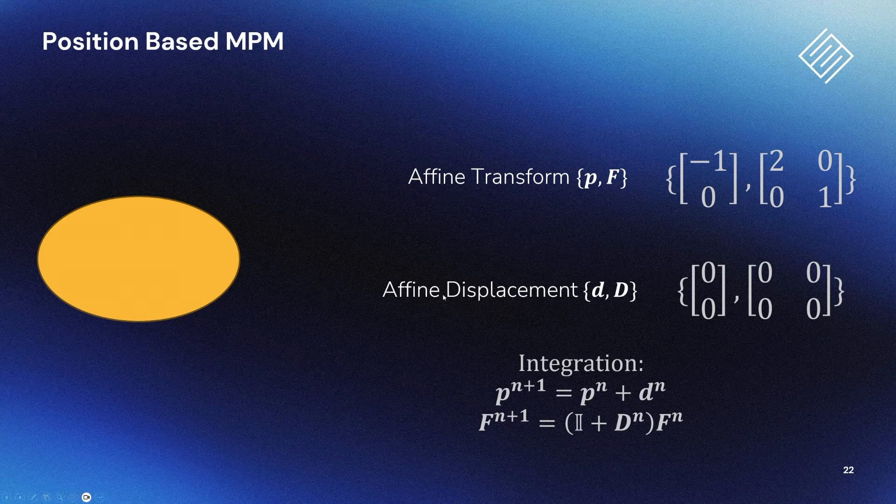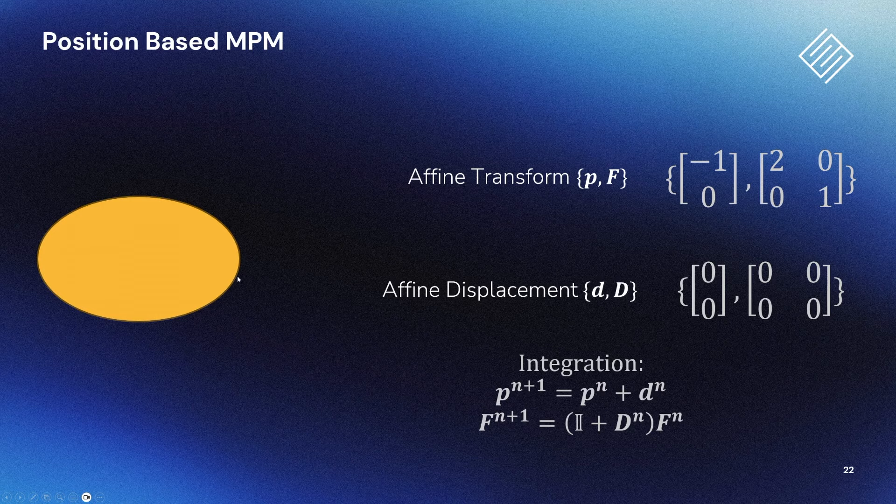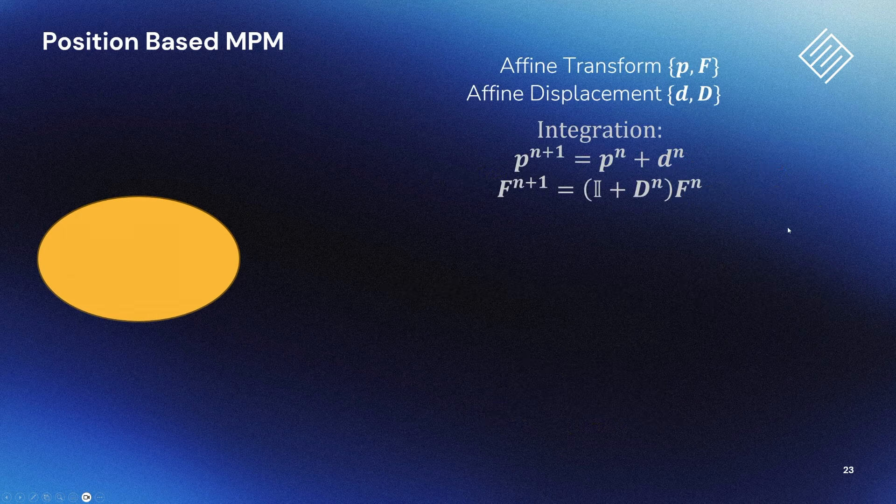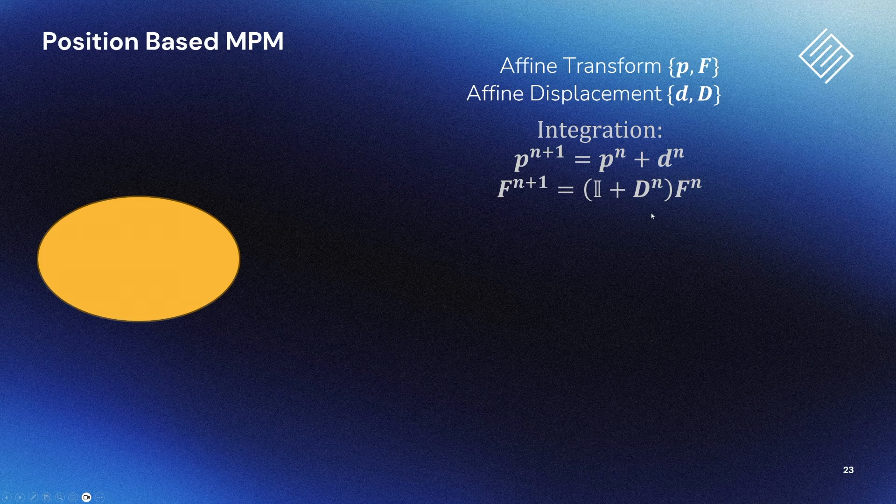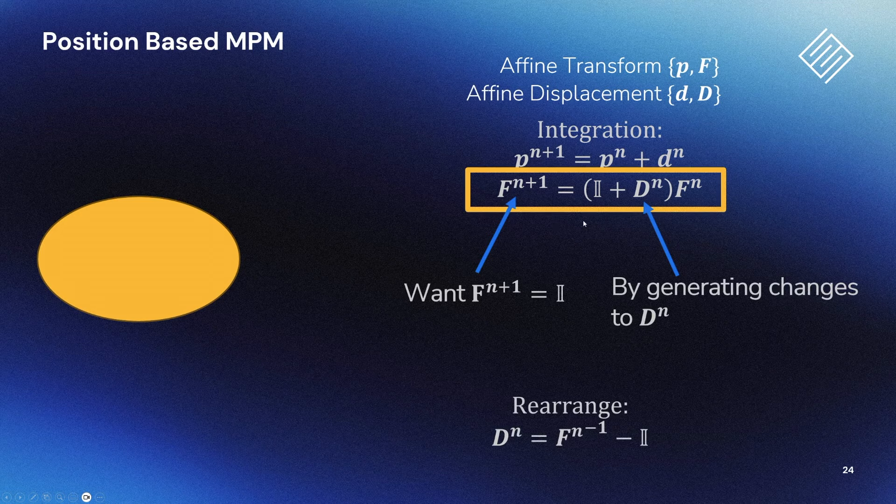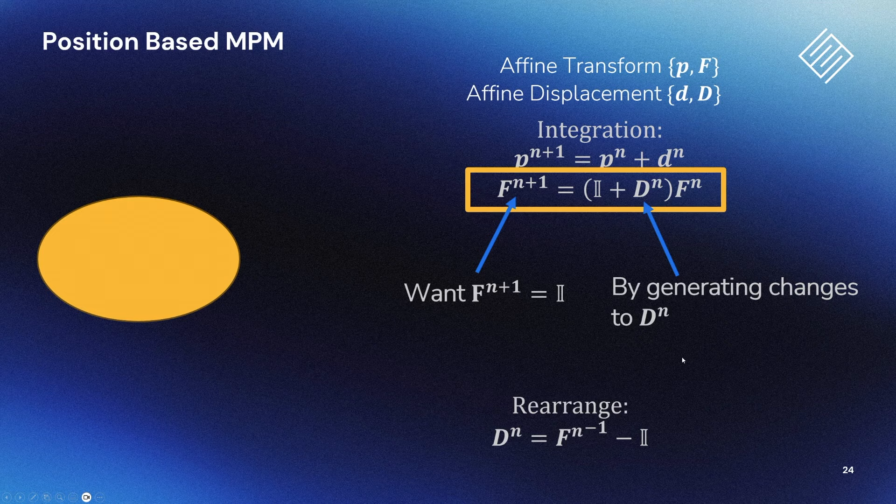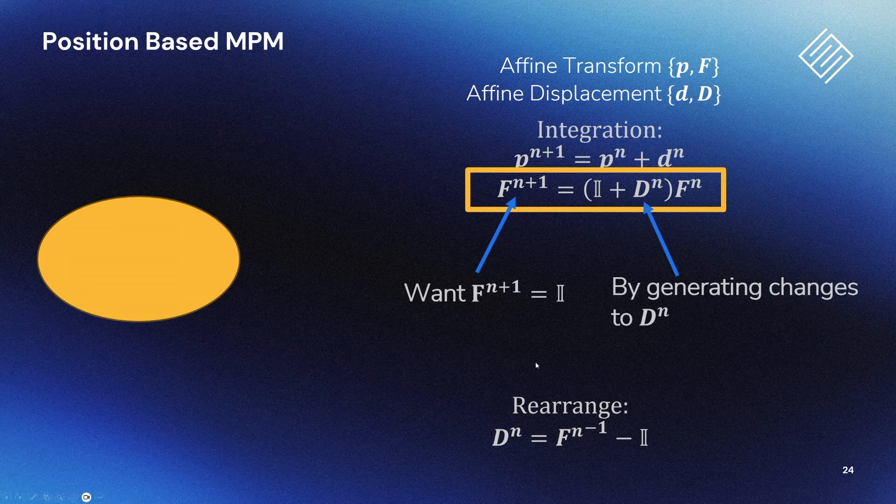Let's have a look at a simple example of constraint resolution. Let's say, as before, we have a particle that's stretched in the x-axis. Its affine transform is going to look like this. Let's say it has an infinitely stiff elastic material, so we need to change its velocity so that its affine transform will become an identity matrix after integration. We can substitute into the integration equation to work out what we need to do to the deformation displacement in order to make this happen at the end of the time step. So in this case we need to add some impulses that act to compress the particle in the x-direction.